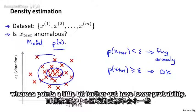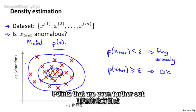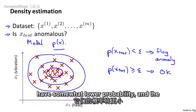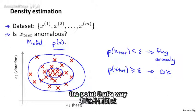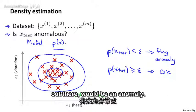Whereas points that are a little bit further out have lower probability. Points that are even further out have somewhat lower probability. And the point that's way out here, the point that's way out there, would be an anomaly.